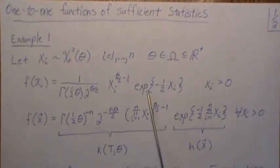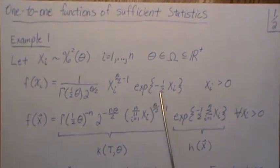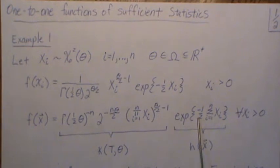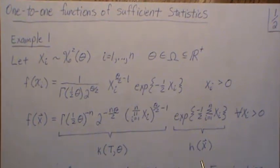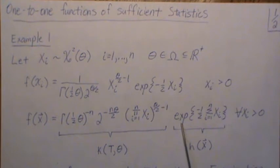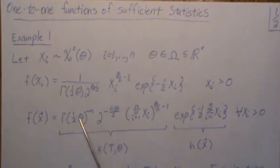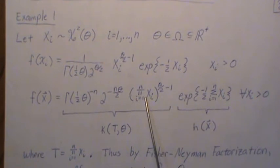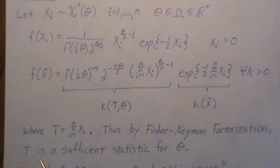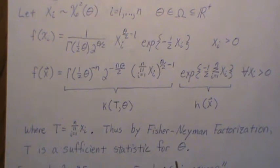Since the product of these really means you sum the exponents, we get this, for all xi greater than zero. Using the Fisher-Neyman factorization notation from the previous video, this piece is a function of only the x's, and this piece is a function of theta and the statistic t, where t is the product of the xi's. Thus, by the Fisher-Neyman factorization theorem, t is a sufficient statistic for theta.